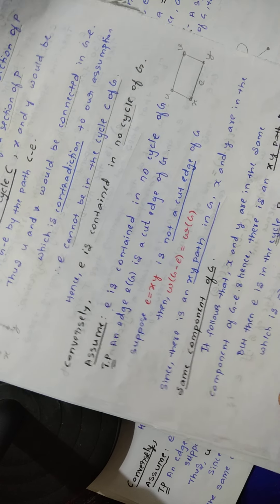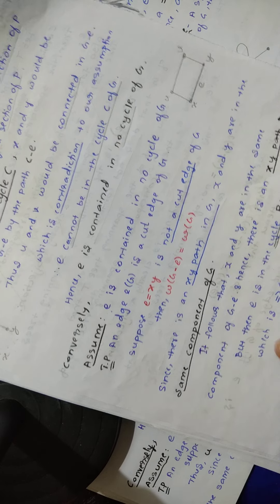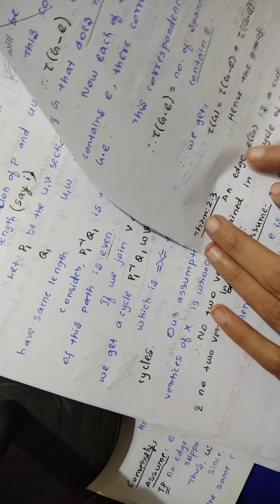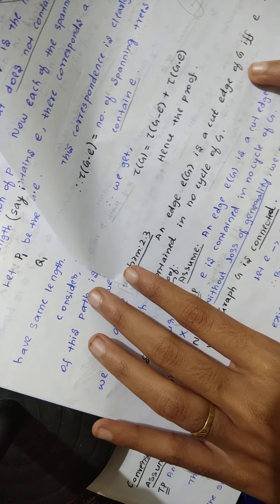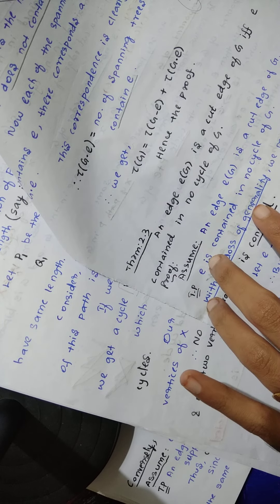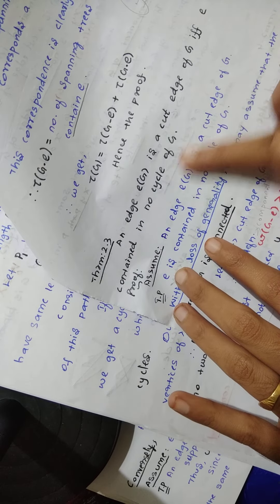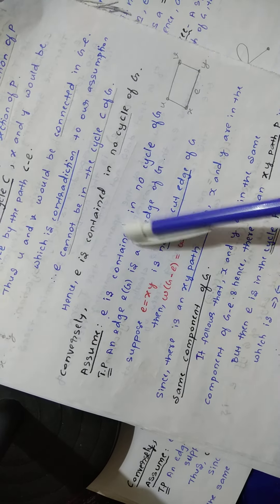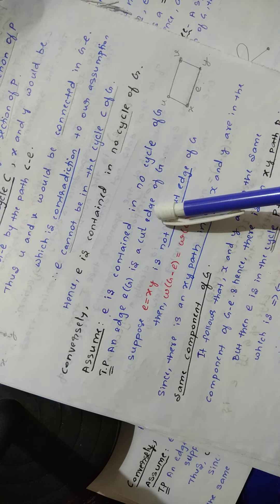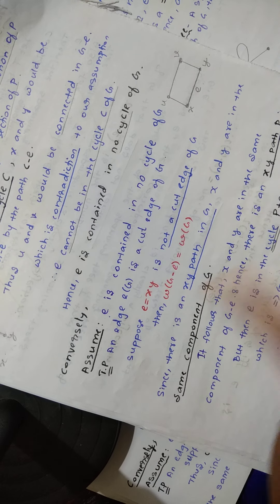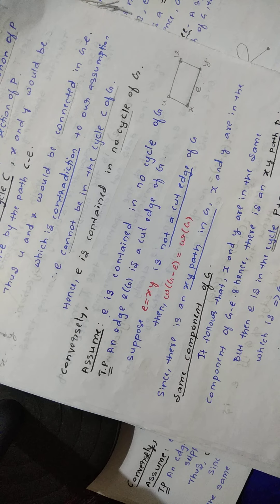In the converse part, we assume the second part and prove the first part. That is, we are going to prove an edge E of G is a cut edge of G, by assuming E is contained in no cycle of G. Suppose E is not a cut edge of G.